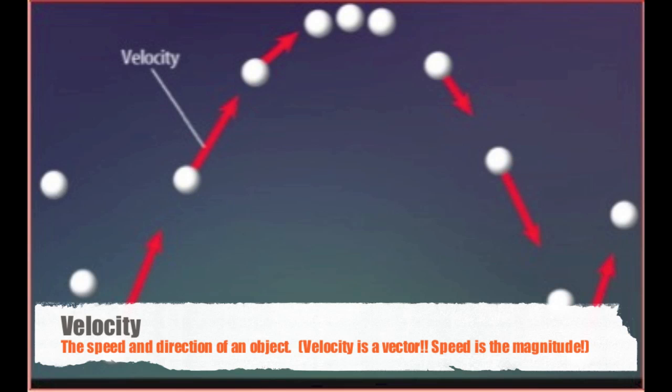In terms of velocity, if someone says they are going 100 miles per hour, they've given you their speed. But if someone says they are going 100 miles per hour east, they've given you their velocity, because velocity tells you both speed and direction. Because velocity is a vector, it has size and direction — the size of a velocity vector is the speed. For example, saying 50 miles an hour north is a velocity because you've given both speed and direction.